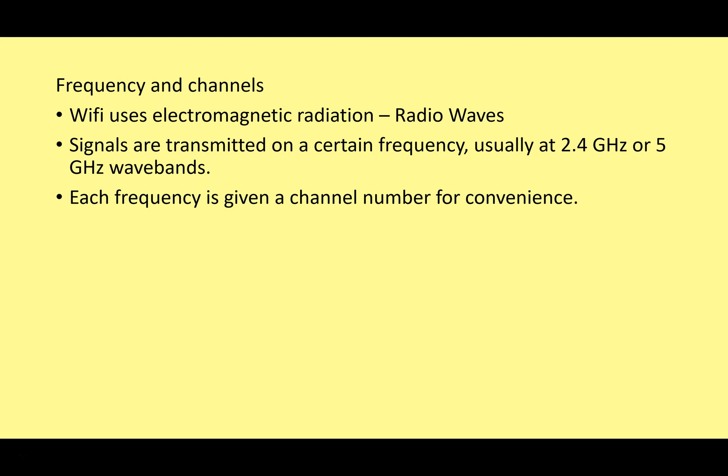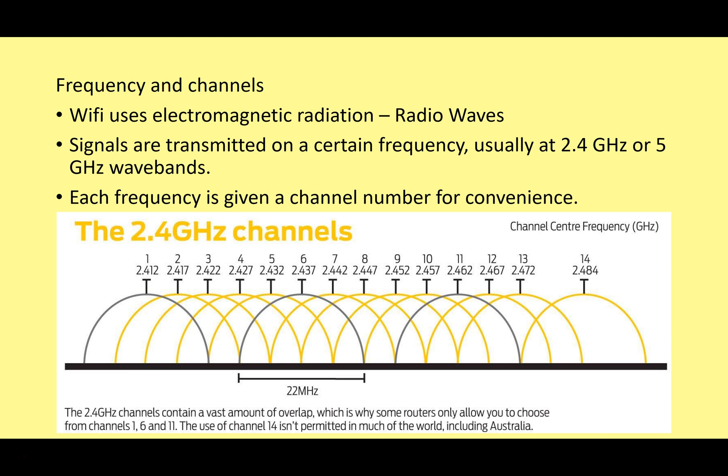Each frequency is given a channel number for convenience. In the same way that radio stations have channel names — in the UK we have Radio 1, Radio 2, etc. — we give Wi-Fi frequencies a channel number because it's easier to learn and remember. For example, channel 6 operates at 2.437 gigahertz, and channel 6 is a lot easier to remember than 2.437 gigahertz.